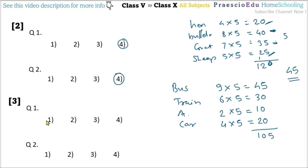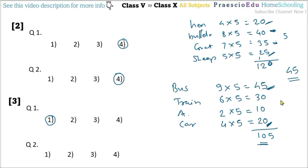Question 1: what is the total number of passengers? That is 105 — option number 1. Question 2: how many people altogether travel by bus or car? Bus = 45, car = 20, so 45+20 = 65 — option number 2.